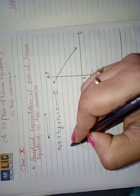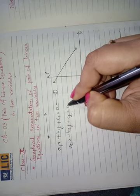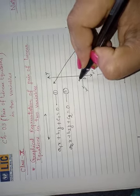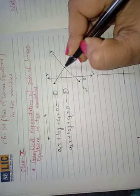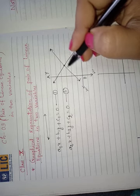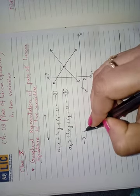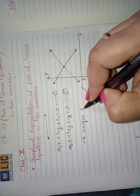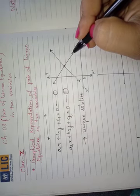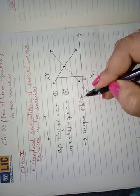Now suppose I take a second linear equation a2x + b2y + c2 = 0 and after drawing its line, if both lines intersect at a point, it means these are intersecting lines. If the graphical representation of a pair of linear equations shows intersecting lines, it means it has a unique solution.